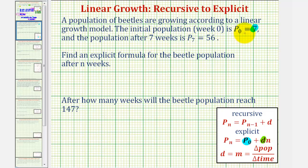Let's begin by writing the given information as ordered pairs. For p₀ = 7, we have the ordered pair (0, 7), where the first coordinate is the number of weeks and the second coordinate is the population. Since p₇ = 56, that's the ordered pair (7, 56).